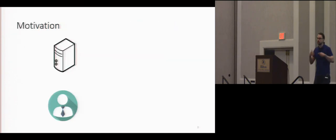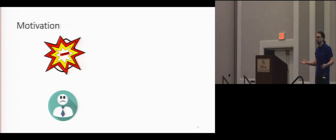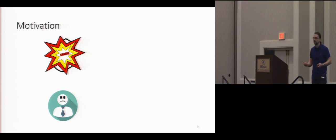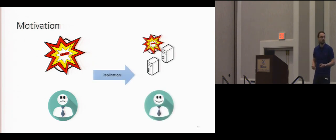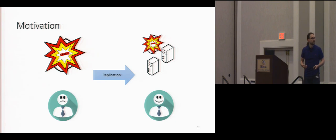Let's say you run a service over the internet — you have clients and a service. If the service runs on a single machine and that machine crashes, you cannot use the service anymore. So one of the standard solutions is to run our service on multiple machines. That way, if one of the machines crashes, your client can still access your service through the other machines. This is called replication.